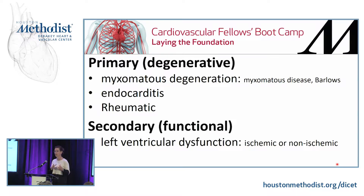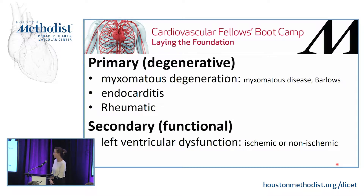The annulus diameter is normally about three centimeters, while Barlow's is five or six centimeters. Also, endocarditis can cause primary MR, and rheumatic heart disease as well.